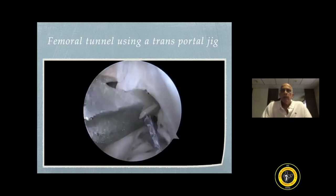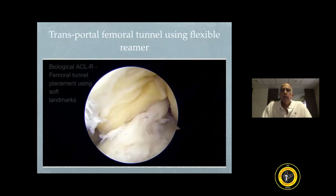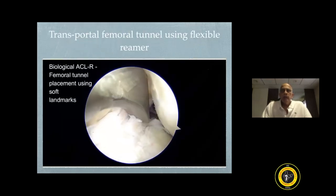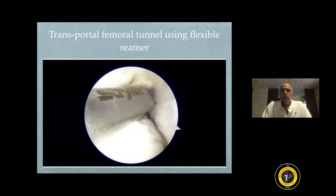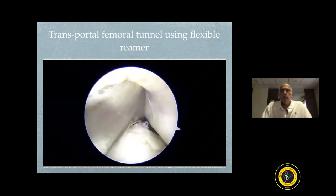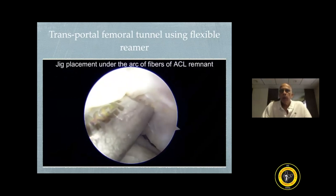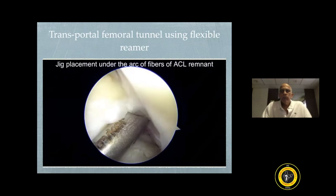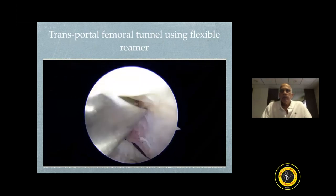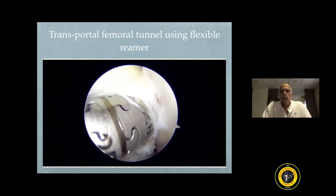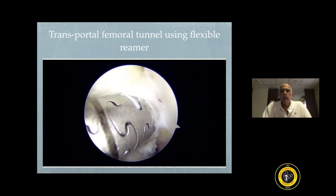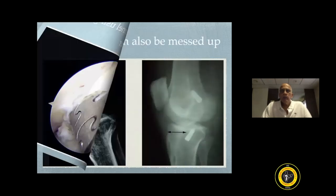The third method is by using flexible reamers. There is a special jig which is introduced from the anteromedial portal. This jig allows a flexible nitinol wire to be introduced. The jig is placed under the remaining fibers of the ACL. As you can see, there is an arch above the wire that you have introduced, and then the appropriate size reamer is progressively used.